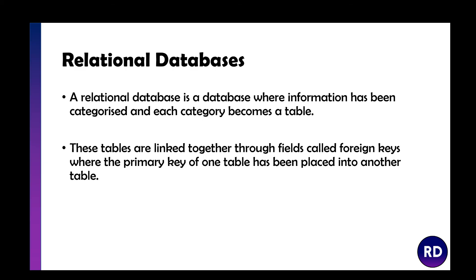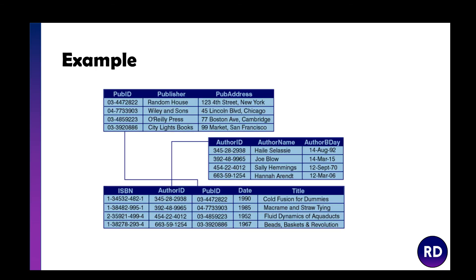Foreign keys are when you use one table's primary key in a different table — placing the primary key of one table into another table creates a connection and links them together. As you can see on the screen, the publisher ID appears in this table here, and the author ID is in this one. So we've got three tables: one for authors, one for publishers, and one for the actual books.